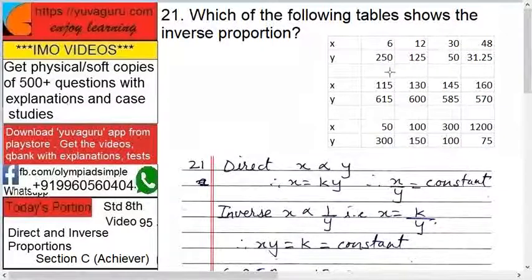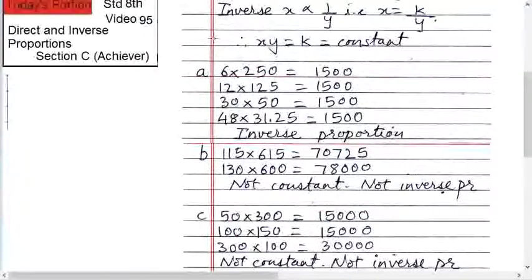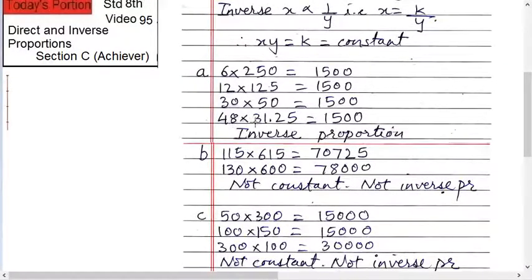So let's check out each one. For table 1: 6 times 250 equals 1500, 12 times 125 equals 1500, 30 times 50 equals 1500, and 48 times 31.25 equals 1500. All products are 1500, so this is inverse proportion.